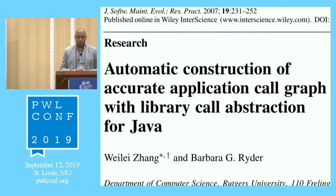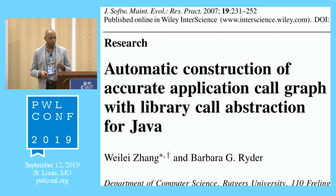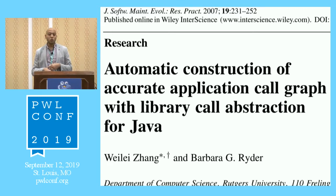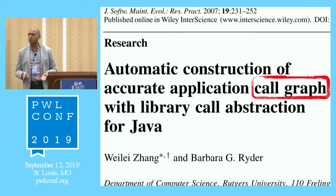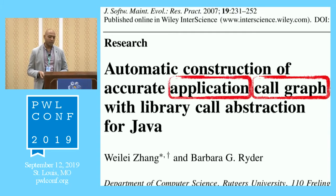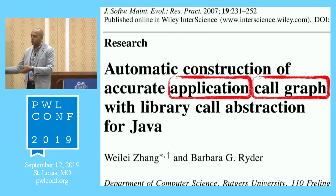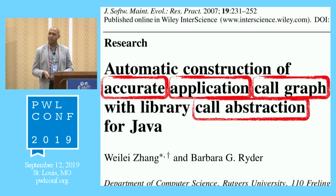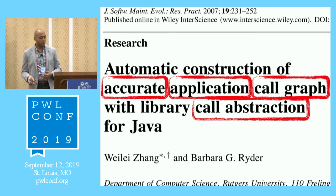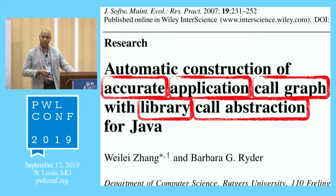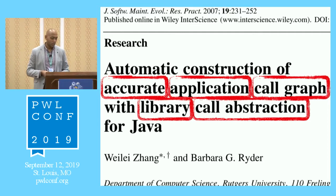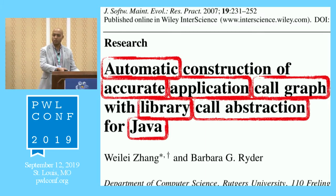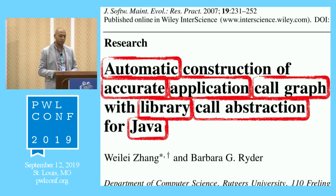I had no idea what that title meant — too many buzzwords. What is a call graph? Obviously something to do with the application, and something to do with a library. Nobody wants an inaccurate call graph. What is call abstraction? And why is Java different from other languages? I wanted to demystify these terms, so I started reading papers and branching out to understand even a single statement, coming back months later after compiling enough knowledge.